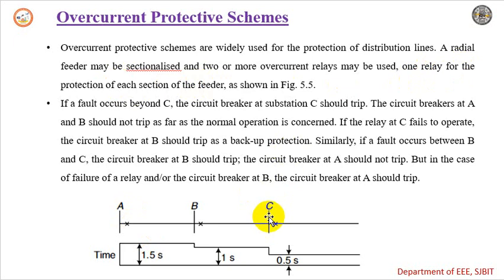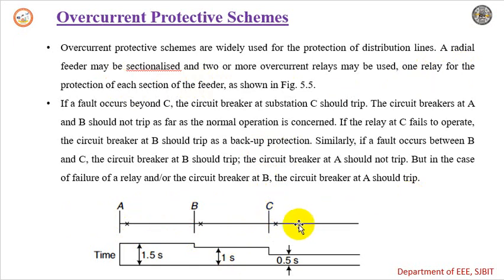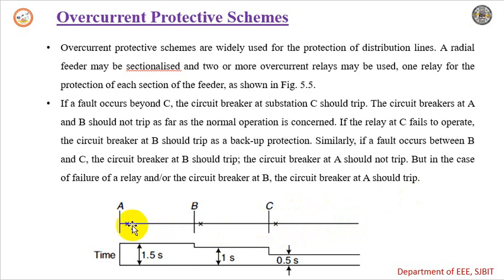At section C, we have its own protective device, as shown in the figure. We have three sections: Section A, Section AB, Section BC, and Section Beyond C. If any fault occurs beyond C, the circuit breaker at substation C should trip. The circuit breakers at A and B should not trip as far as normal operation is concerned.